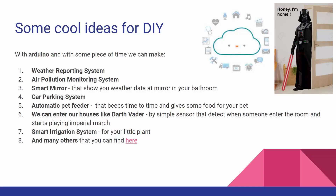Here are a few cool Arduino project ideas. With Arduino and some time, you can make a weather reporting system, an air pollution monitoring system, a smart mirror that shows weather data on the mirror in your bathroom, a car parking system, an automatic pet feeder that beeps from time to time and gives food to your pet. You can also enter your house like Darth Vader with a simple sensor that detects when someone enters the room and starts playing the Imperial March. You can also make a smart irrigation system for your plants, and many others you can find in the description below.